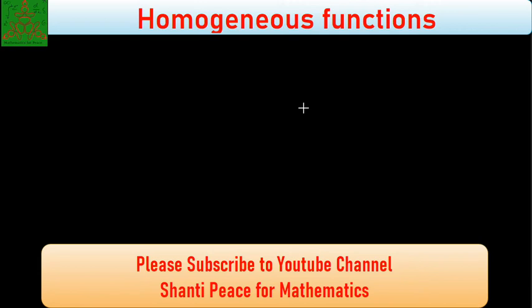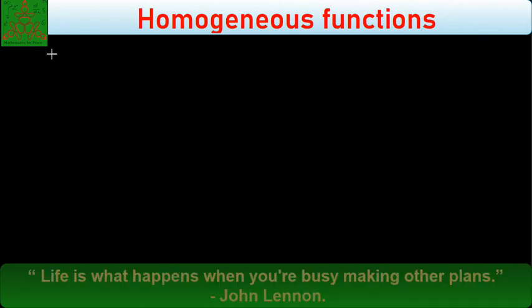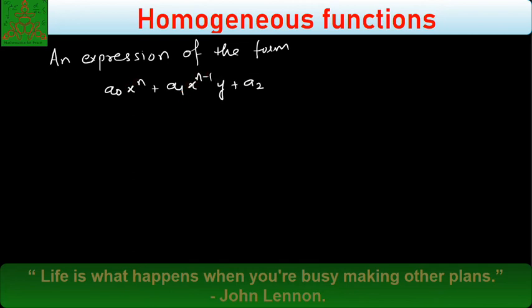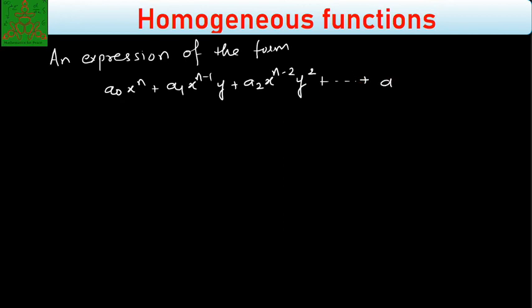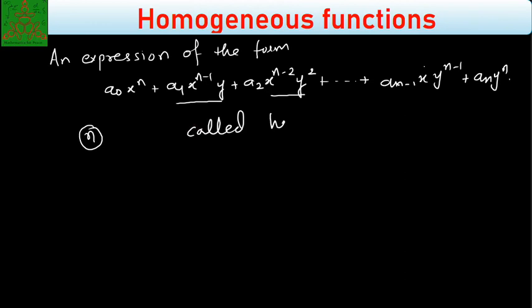Welcome to Shanti Peaceful Mathematics. In this lecture we will discuss about what is the homogeneous function and an expression of the form a₀xⁿ + a₁xⁿ⁻¹y + a₂xⁿ⁻²y² + ... + aₙ₋₁xyⁿ⁻¹ + aₙyⁿ. In this expression every term is of degree n, and that's why it is called a homogeneous function of degree n.